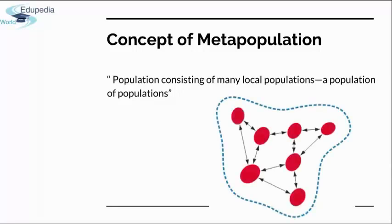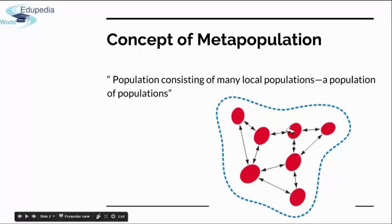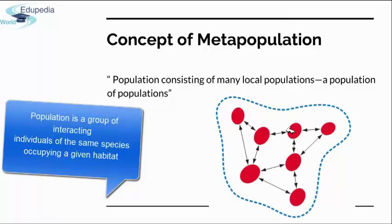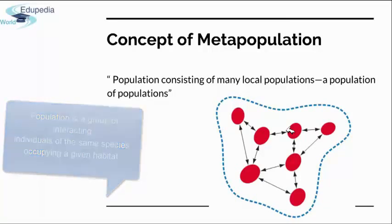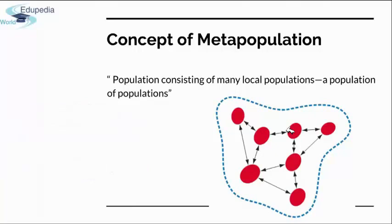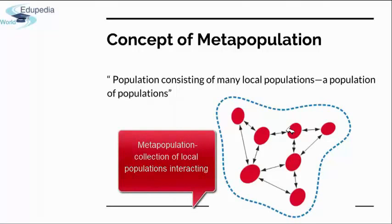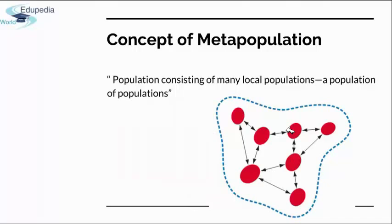This diagram illustrates the concept of a metapopulation. The little red circles represent those populations, and the arrows within them represent their interactions — they are interacting just as we define: a population is a group of interacting individuals of the same species occupying a given habitat. The metapopulation is represented as a collection of local populations interacting within a large area or region.